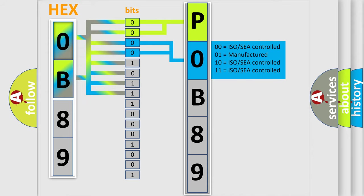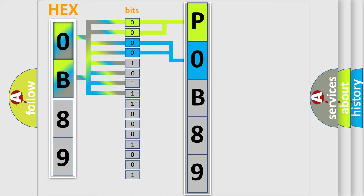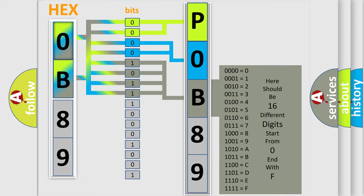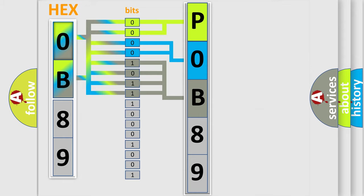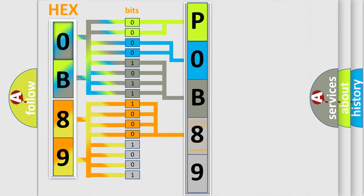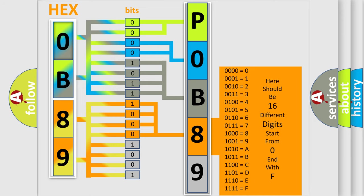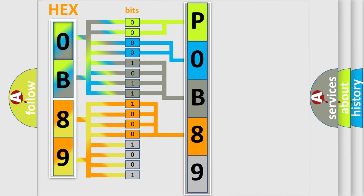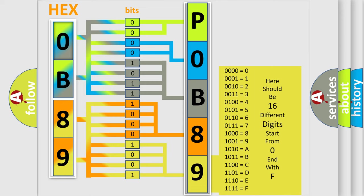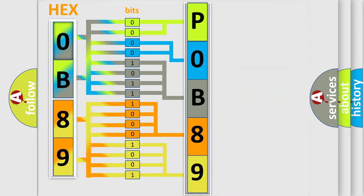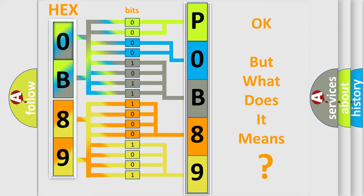The last bits of the first byte define the third character of the code. The second byte is composed of a combination of eight bits. The first four bits determine the fourth character of the code, and the combination of the last four bits defines the fifth character. A single byte conceals 256 possible combinations. We now know in what way the diagnostic tool translates the received information into a more comprehensible format.